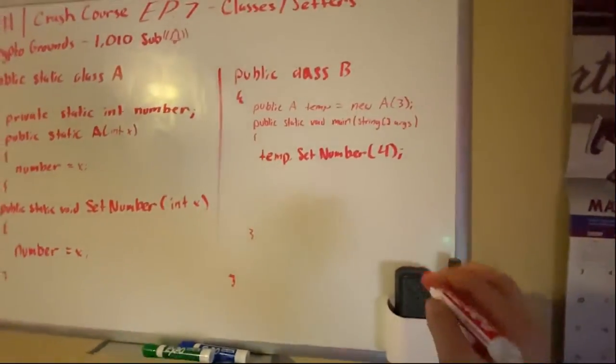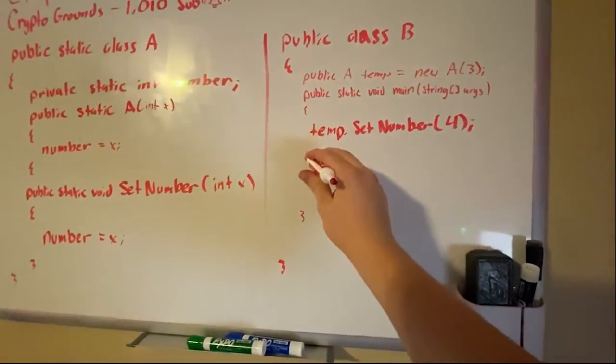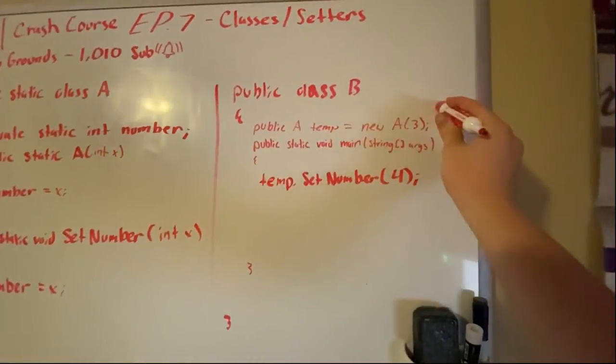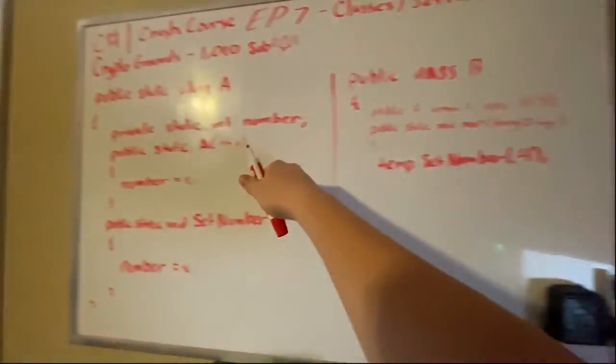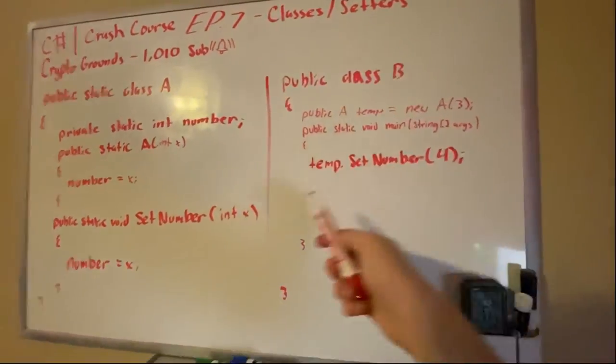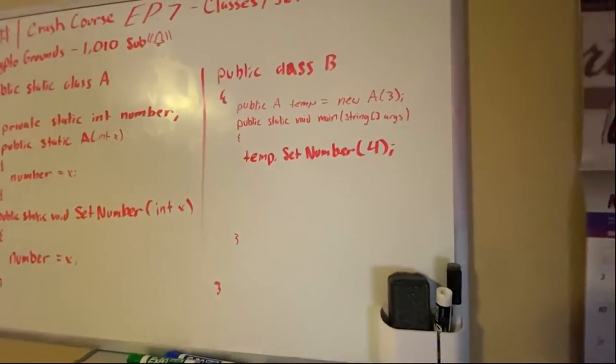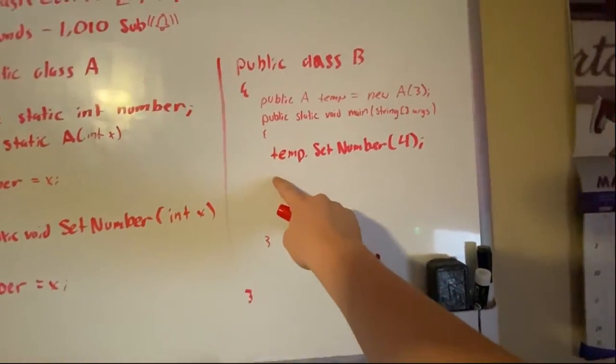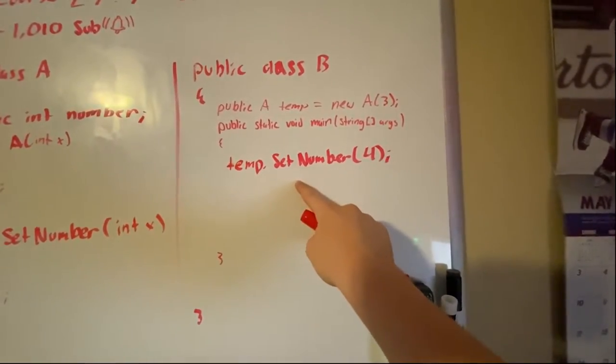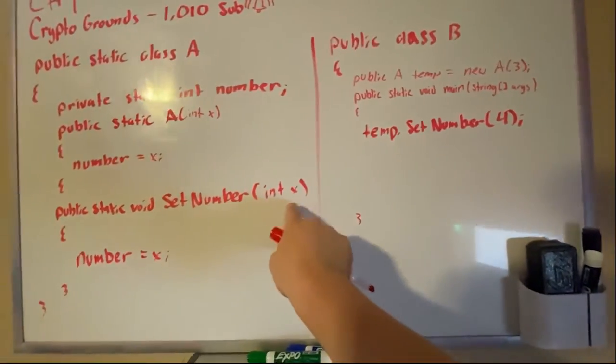So basically what I did here is that we created our A object right here, and we decided to add int x over here. Because let's say we want to predefine what number is when we create that object. So now in here we do temp.SetNumber, and then we put our integer in, and it will change number in object A to 4.